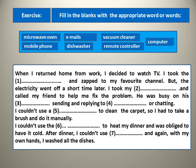Now let's try this exercise. By the way, you can find this exercise in your textbook, Ticket to English, page 129. The question says: fill in the blanks with the appropriate word or words. The words are: microwave oven, emails, vacuum cleaner, mobile phone, dishwasher, remote controller, and computer. You can click pause to finish your exercise, then come back to check your answers.